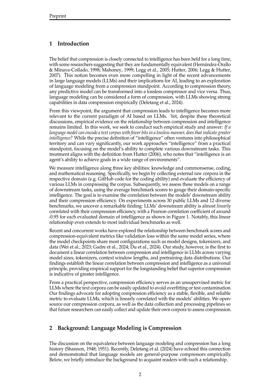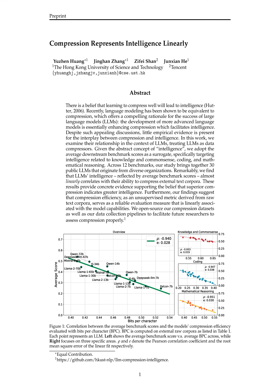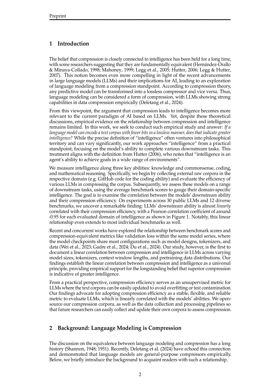They conducted experiments across 30 public LLMs and 12 diverse benchmarks, uncovering a remarkable finding that LLM downstream ability is almost linearly correlated with their compression efficiency, with a Pearson correlation coefficient of around minus 0.95 for each evaluated domain of intelligence. This linear relationship was observed across different model sizes, tokenizers, and pre-training data distributions, and extended to most individual benchmarks as well.